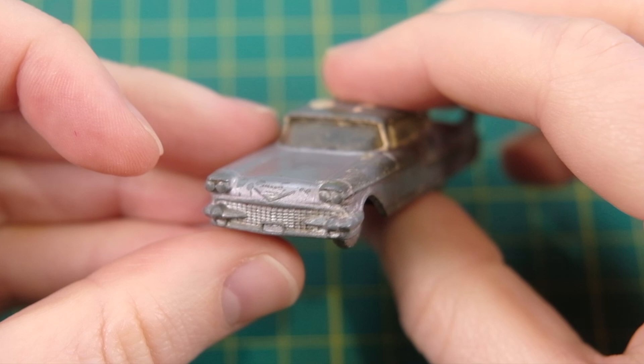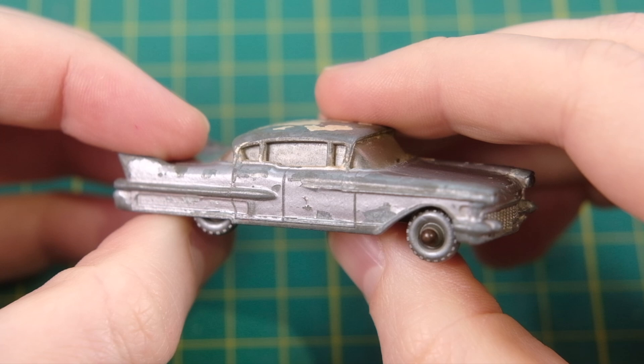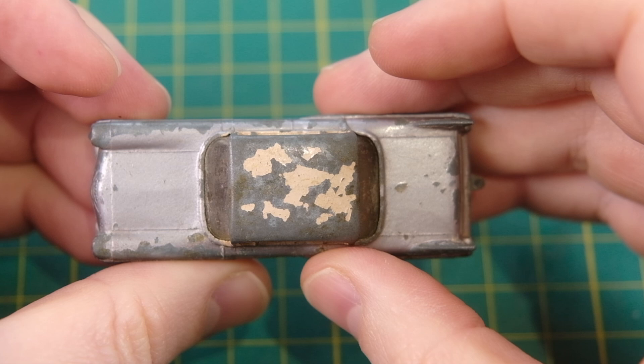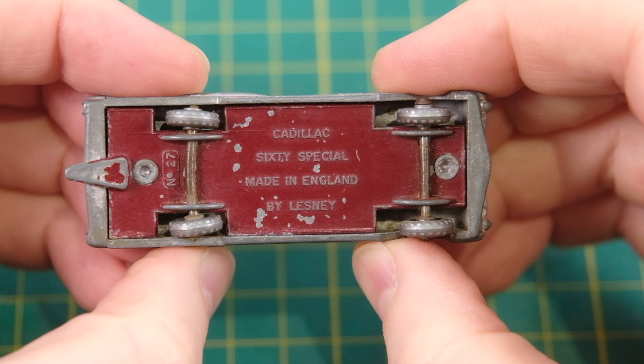Hello and welcome to DieCastRestos where today I am tackling two separate 1960 castings. Similar in color they go together as a matching pair nicely. This is the 27C Cadillac 60 Special which remained in the 1-75 range until 1966. There were a number of color variations on this casting which I'll go into a bit later.